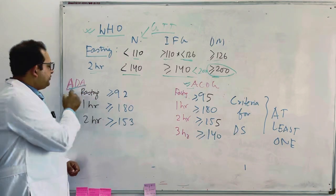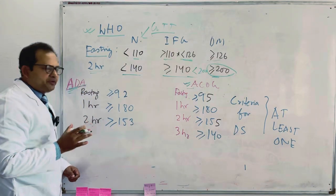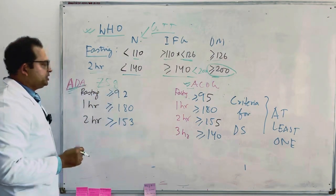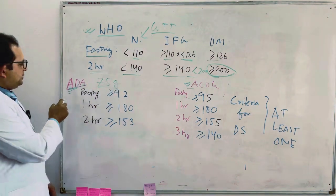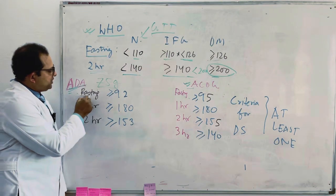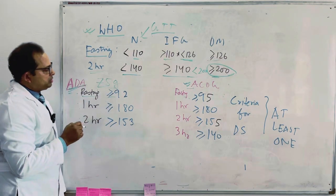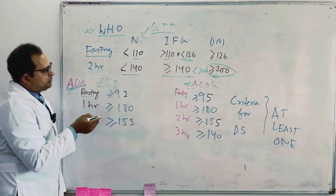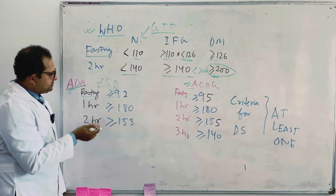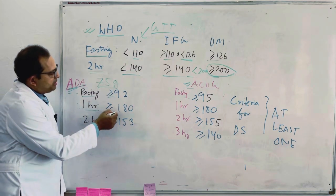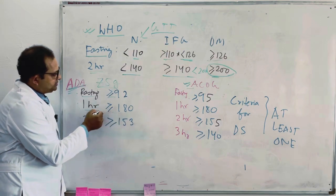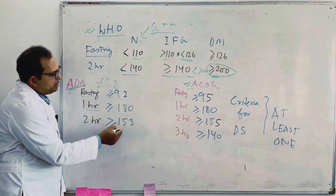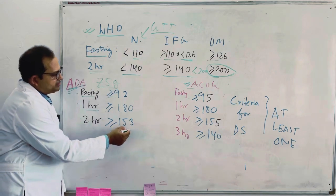The criteria for ADA is somewhat different. First of all, we consider with the ingestion of 75 grams of glucose. I told you that in ADA we take the fasting, one hour, two hour. So fasting should be equal to or less than 92. If it is more than or equal to 92, it is gestational diabetes. If it is more than or equal to 180, it is gestational diabetes. Again, two hour sample if it is more or equal to 153, it is gestational diabetes.